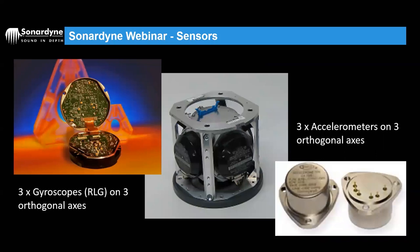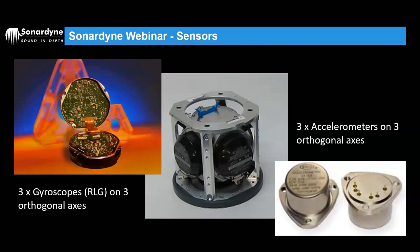We've got three ring laser gyros and three accelerometers. One ring laser gyro for each orthogonal axis and one accelerometer for each axis. On the picture in the middle you can see an older system but the principle is the same - two gyros visible here with a third on the underside, forming a cube formation with accelerometers on the other sides. This allows us to take gyro and acceleration readings for each axis.